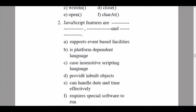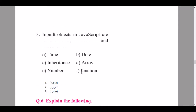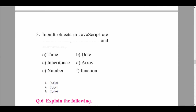Question 3: inbuilt objects in JavaScript are dash, dash and dash — the answers are option B date, option B array, and option E number.